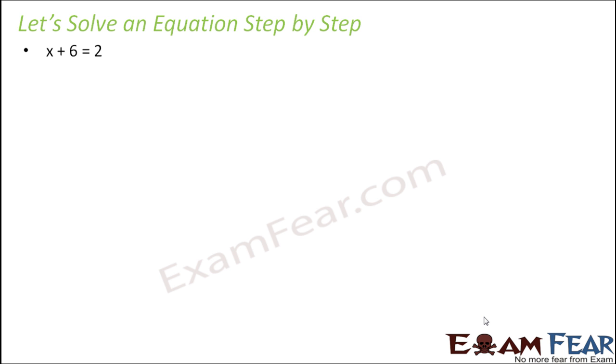Now with this approach in mind, we will solve the equation step by step. Here we are taking example of a very simple equation. Let us try to solve x plus 6 equals 2 step by step. What is going to be our first step? Our aim is to bring all the variables on one side. So we prefer keeping the variables on the left hand side and we will try to move all the constant values to the right hand side.